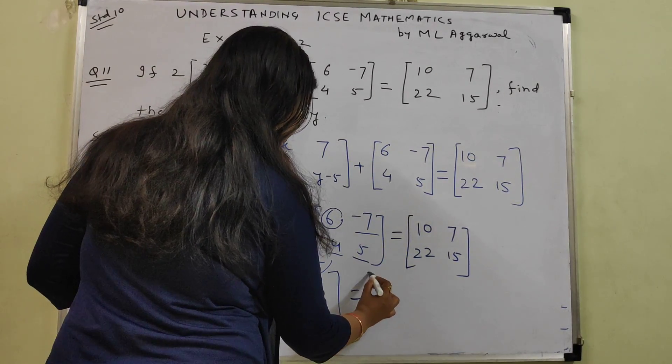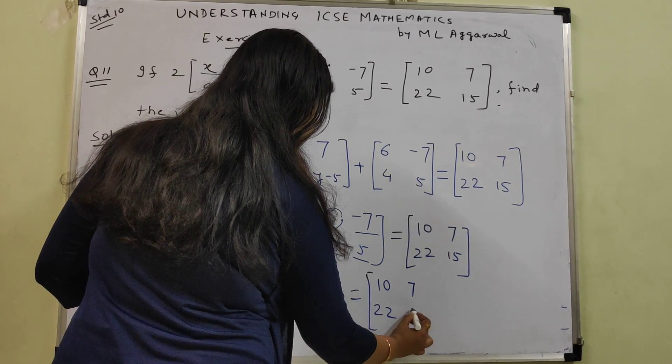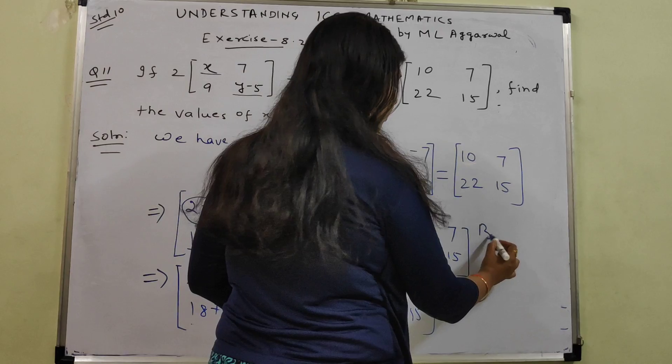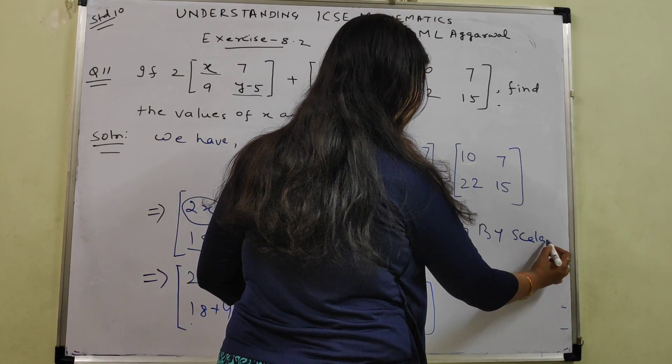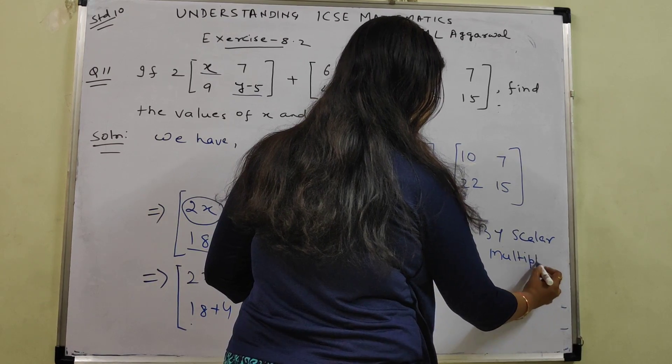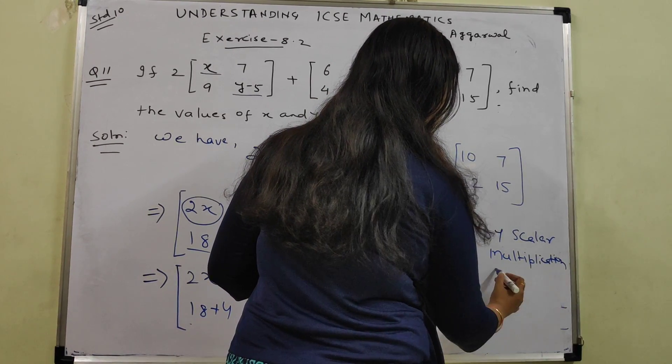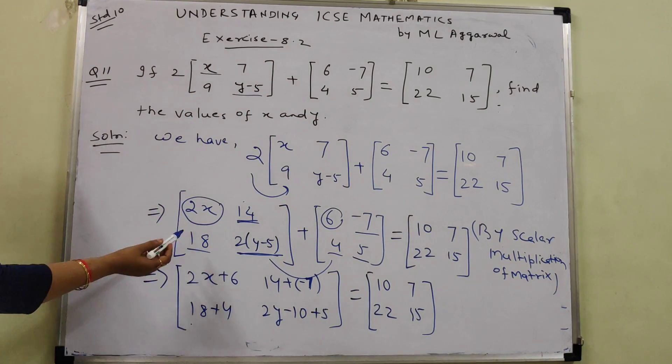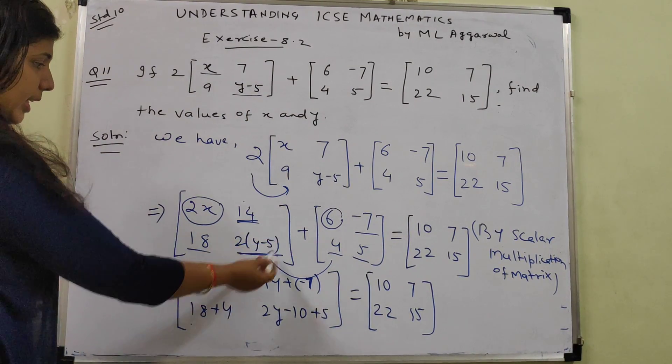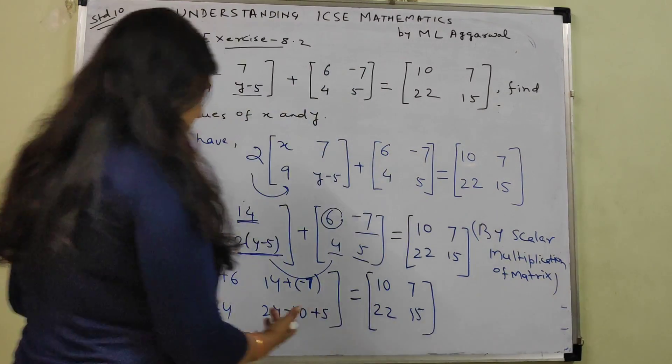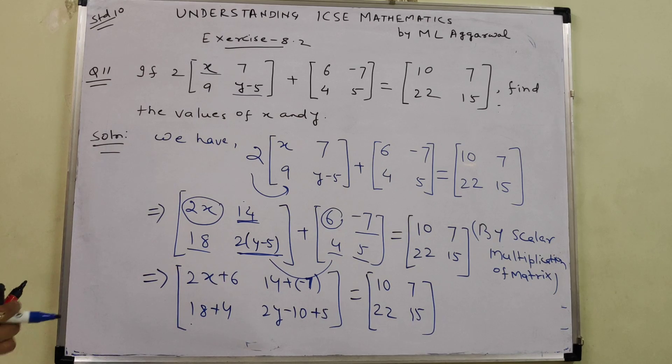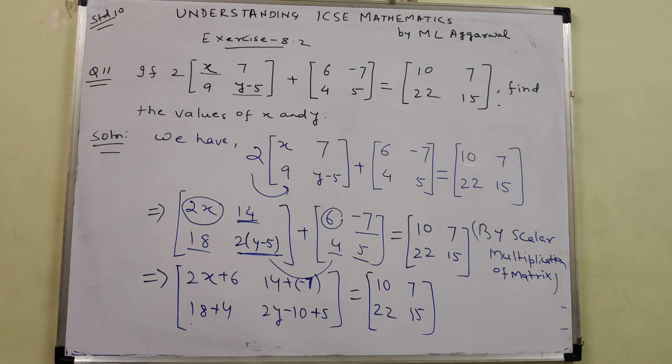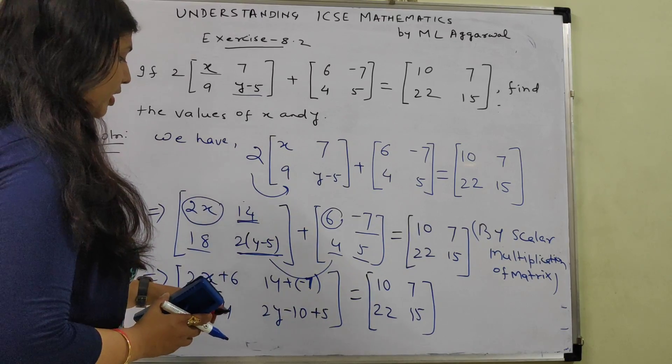Equal to 10, 7, 22, 15. We can write here by scalar multiplication. By scalar multiplication of matrix. Afterwards, we can write by adding 2 matrices. Now next step. We will sort it out inside this matrix. And then by equality of matrices, we will equate the terms. So let's sort out if we have to do some addition subtraction.